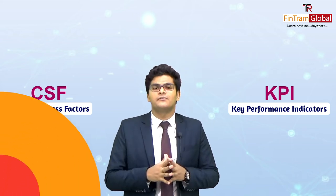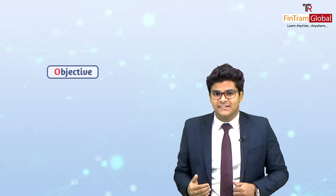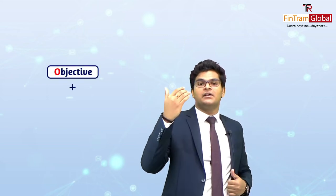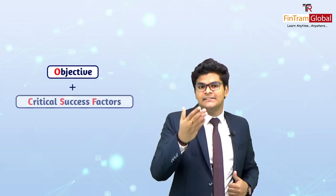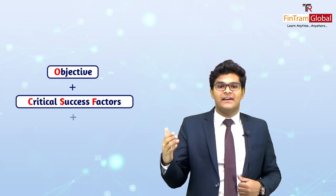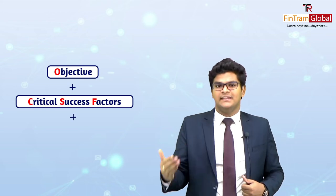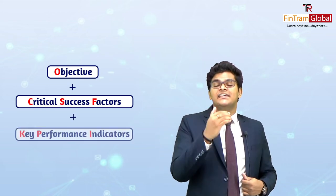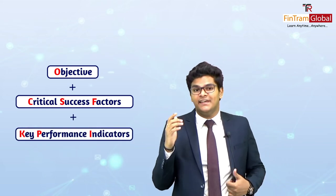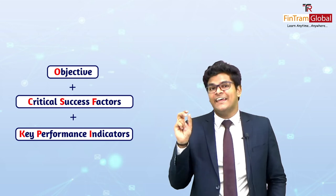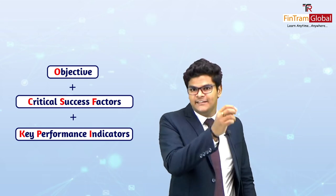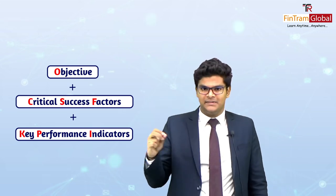So to summarize overall: first there's the objective, then we identify the critical success factors where we have to excel, and then we set key performance indicators to measure the extent to which we have excelled in each of these critical areas.